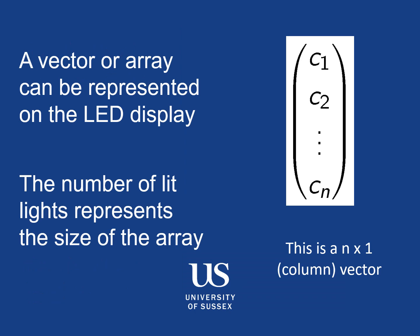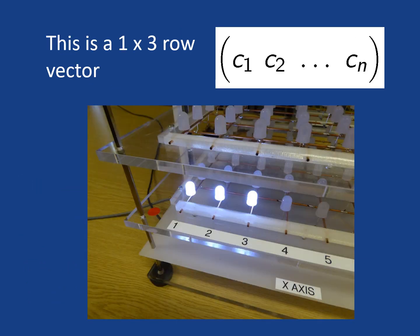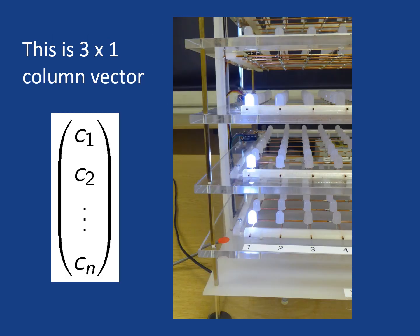We can use the LEDs in our beautiful array to help teach this. So for example, it's very simple, but we've got three LEDs lit here on this picture. This is a one by three row vector. On this picture, we've also got three LEDs lit up but in a different orientation. So this actually represents a three by one column vector.